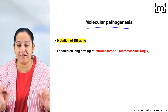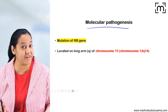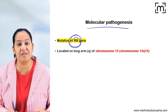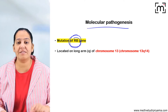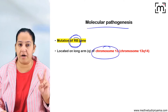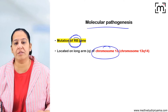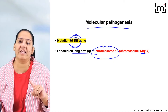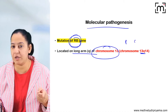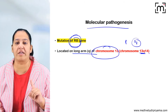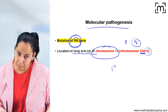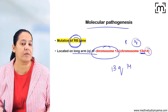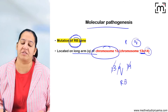Now for the pathogenesis of retinoblastoma: it occurs due to mutation of the retinoblastoma gene, the RB gene. This gene is present on chromosome number 13, specifically on the long arm (Q arm) of chromosome 13 at the 14th locus — written as 13Q14. The P arm is the short arm and Q is the long arm, so the locus for the retinoblastoma gene is 13Q14.